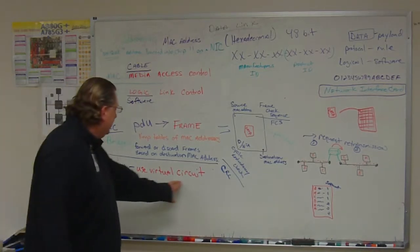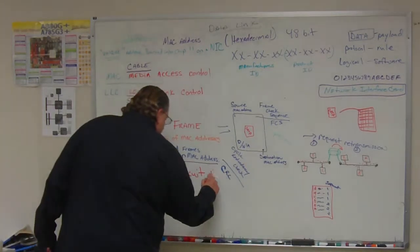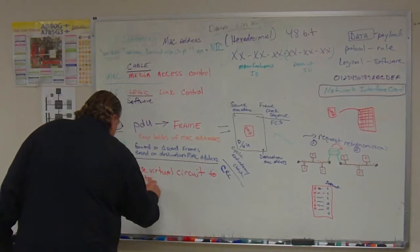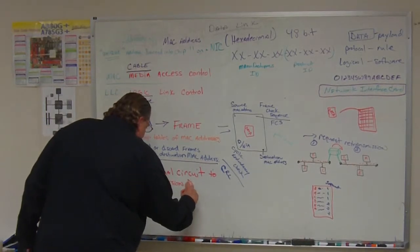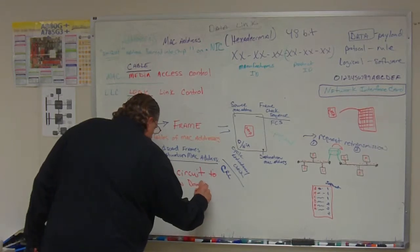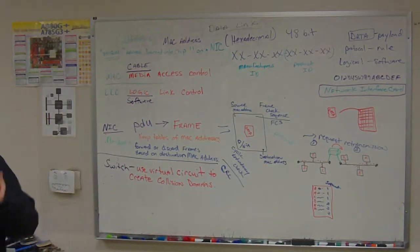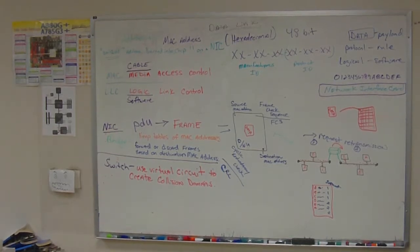Well, it uses a virtual circuit to create collision domains. You remember what a collision domain is from a bridge? Collision domain, what's that sound like it's saying? And I'll start the sentence off for you. A collision domain is a part of the network that can what?